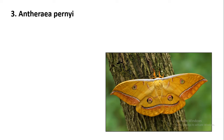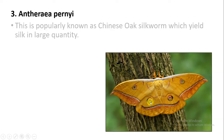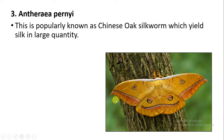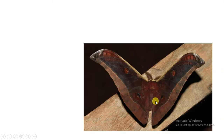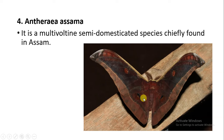The next species is Antheraea perni, also called the Chinese oak silkworm, which can yield silk in large quantities. The color of the silk produced by this moth is pale buff.